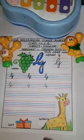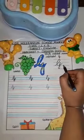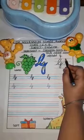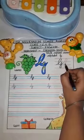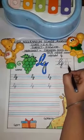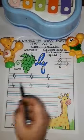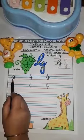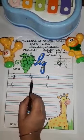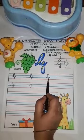So let's start writing, starting from the third line. G for grapes. G for giraffe. G for gift.